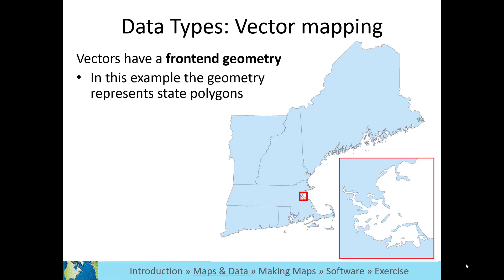Mapping geospatial data. Geographic data include both a front-end geometry, meaning what you see on the screen in GIS software, and the back-end database. The front-end geometry and back-end database are different for raster and vector data.